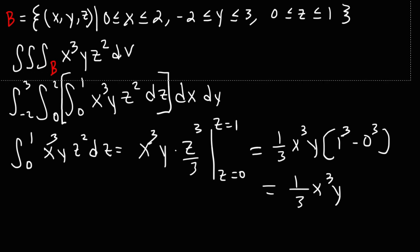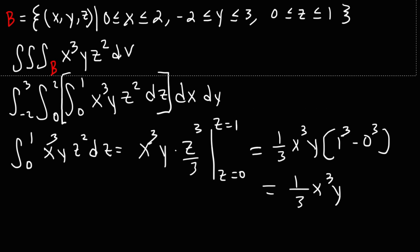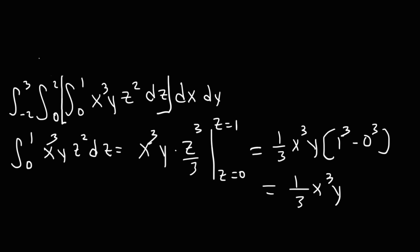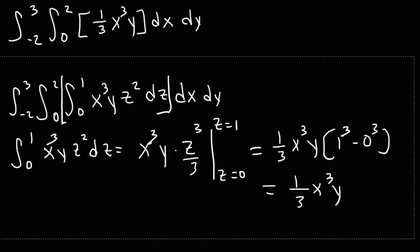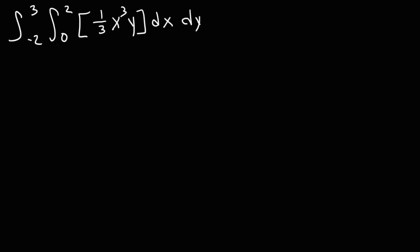Let me get rid of that since it's no longer needed. Right now we have the integral from negative 2 to 3, and then the integral from 0 to 2, and inside of that it's 1/3 x cubed y, then dx dy. So now let's move on to our second integral — that's going to be the integral from 0 to 2 of 1/3 x cubed y dx.